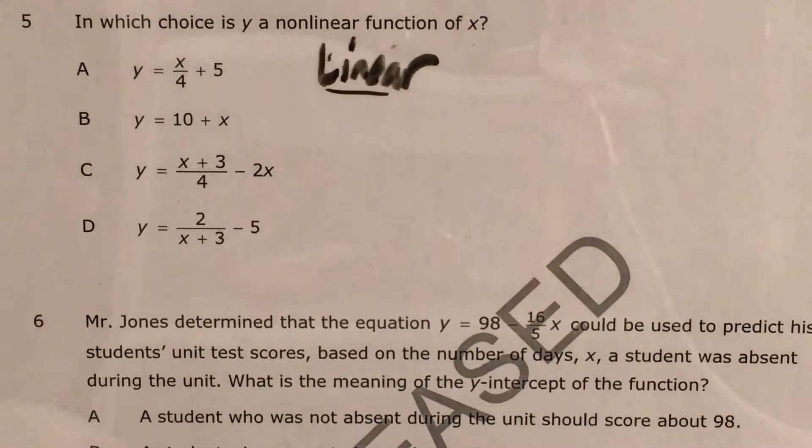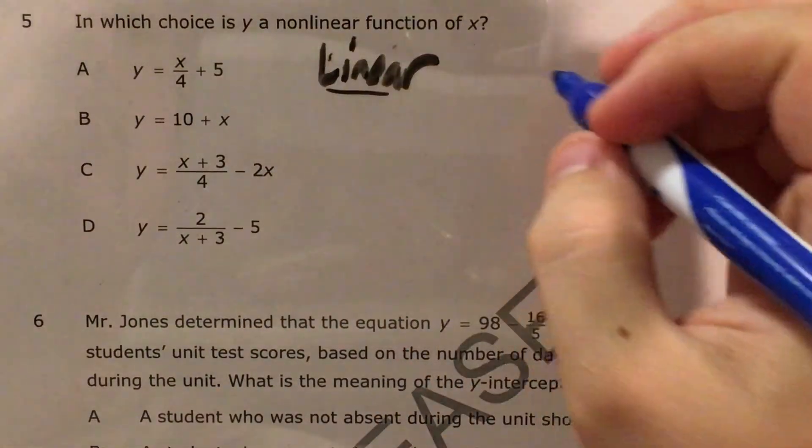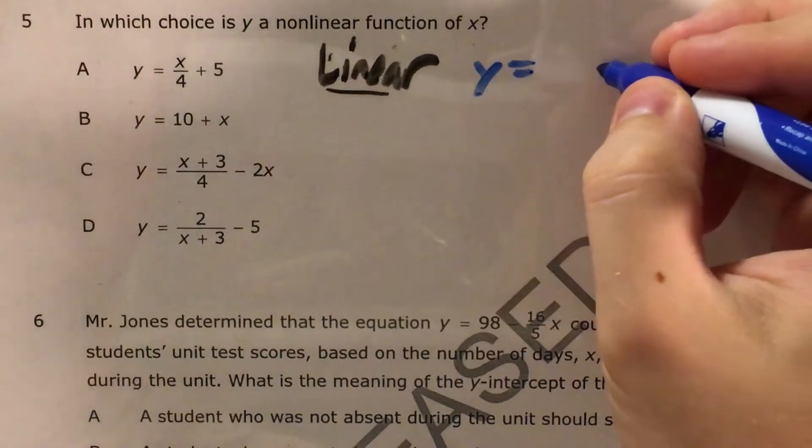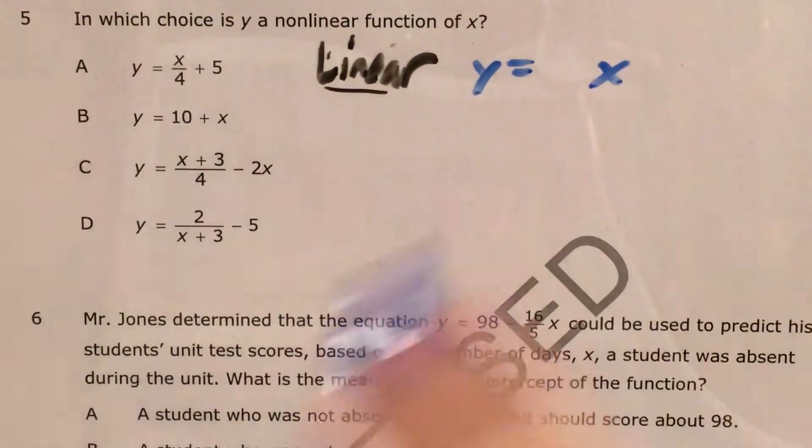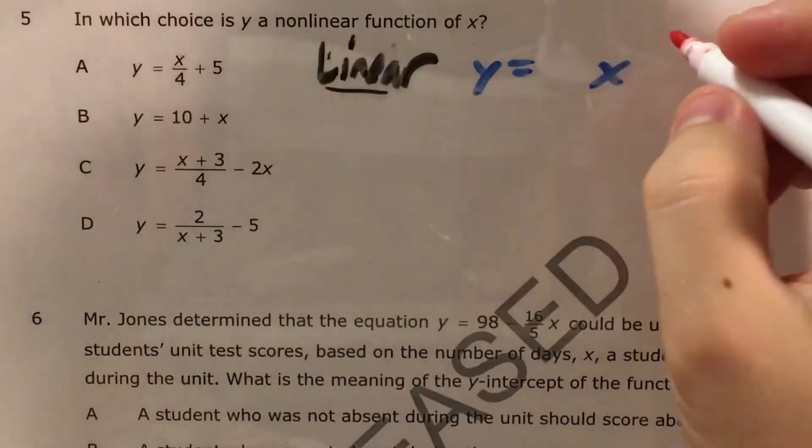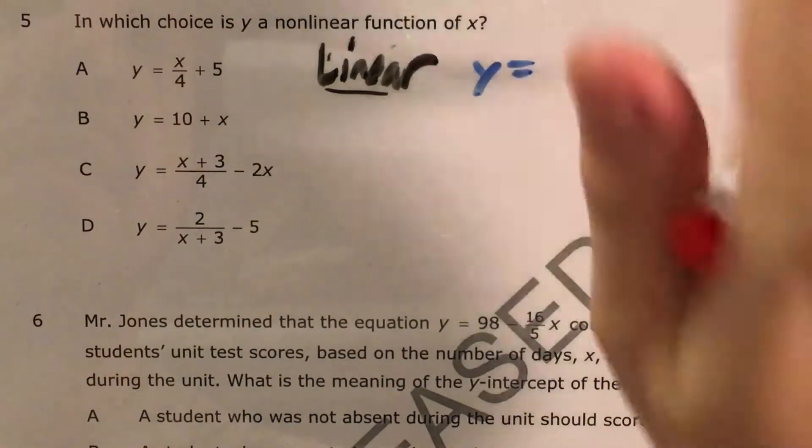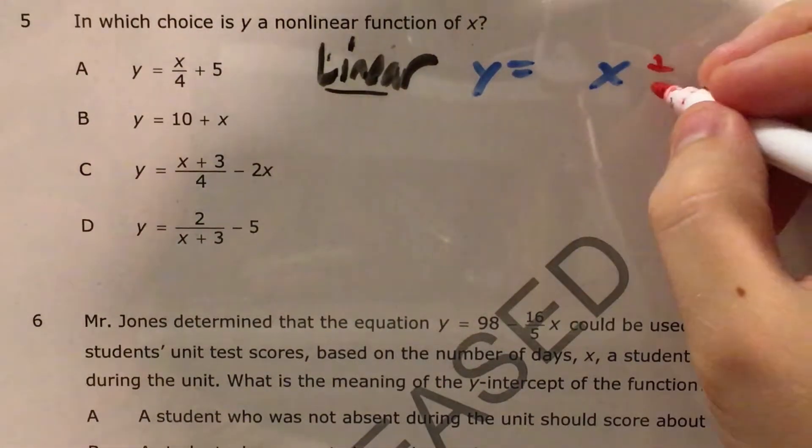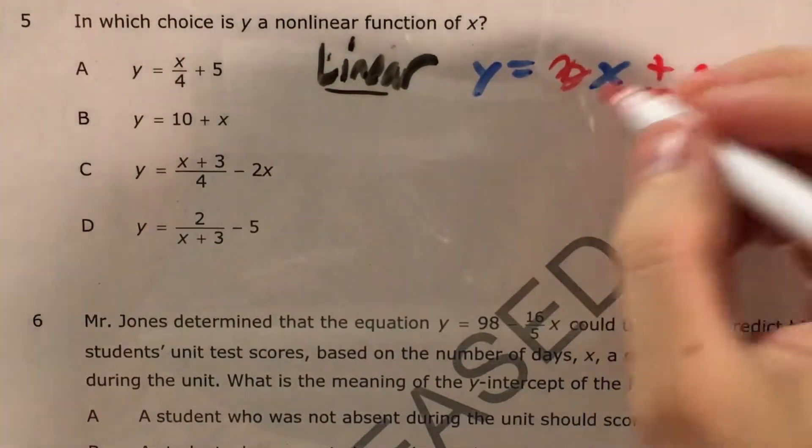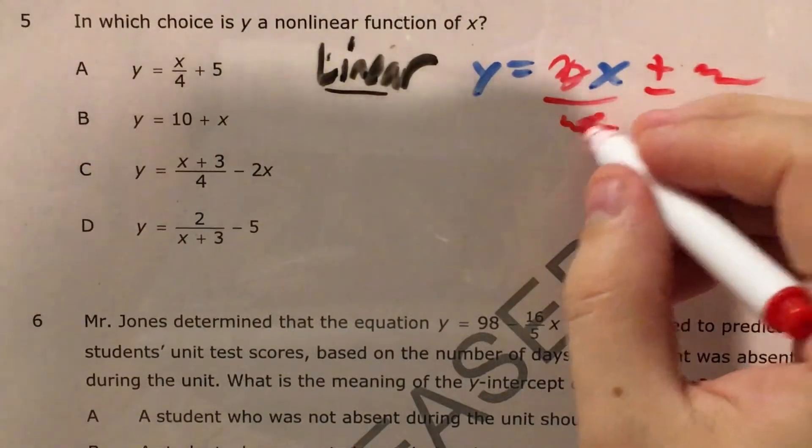In order to be a linear function, if we look at it in function notation language in y equals language, we have to see y equals and then x. Some other stuff that is allowed so that we can still be a linear function includes plus something or minus something. We can have some junk over here. We can even put x on top of a fraction.